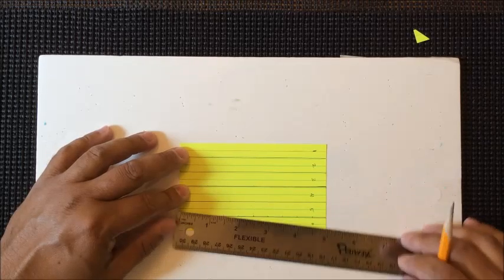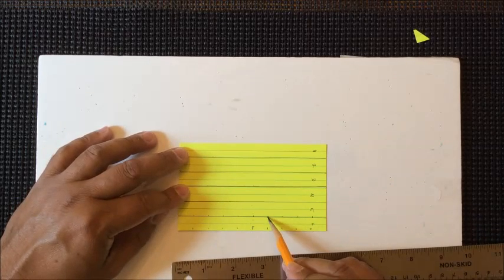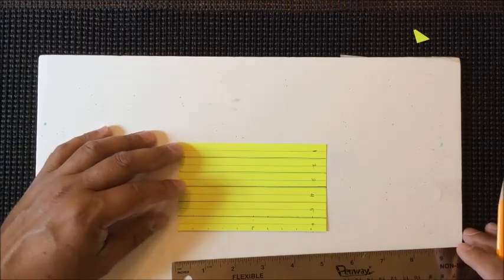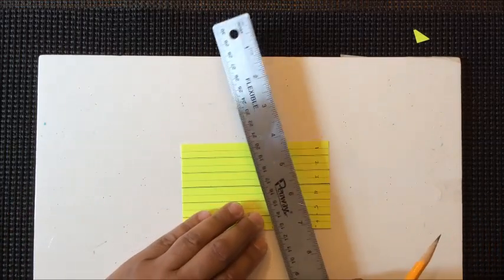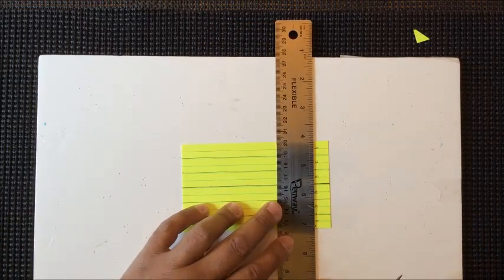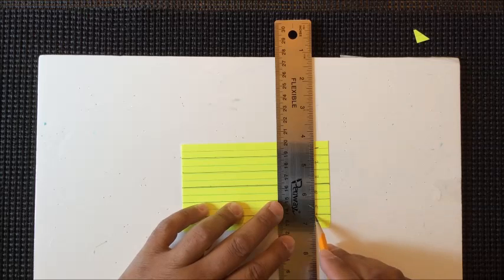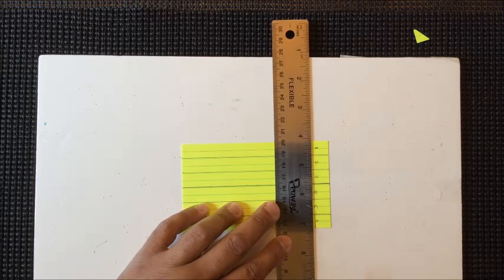So I have my marks now. I have my mark at half an inch here and down here. So all I have to do now is then turn my ruler sideways, beginning with the right side, connect those two marks and draw a straight line.